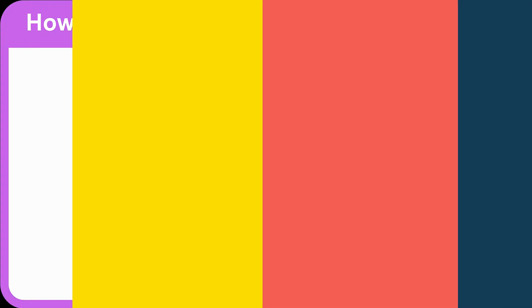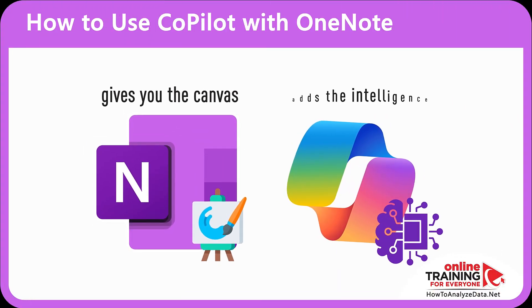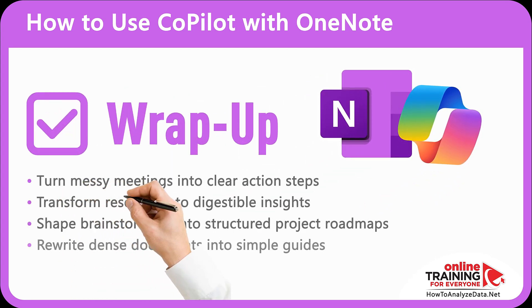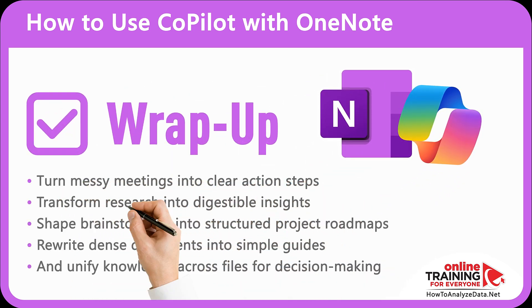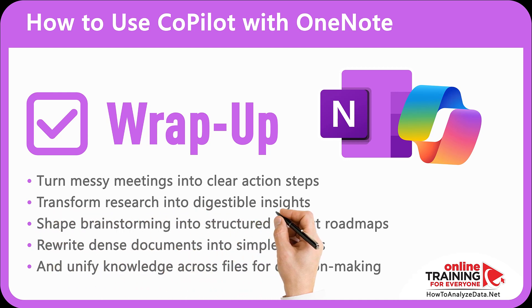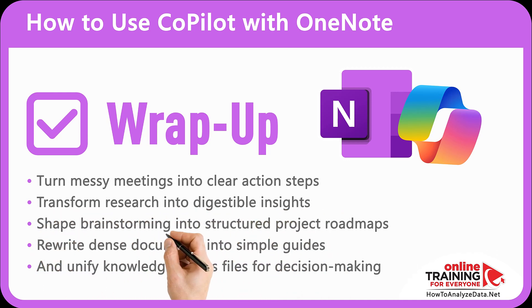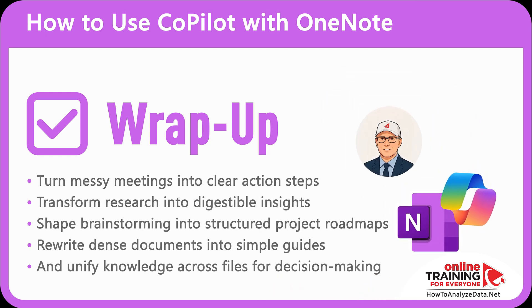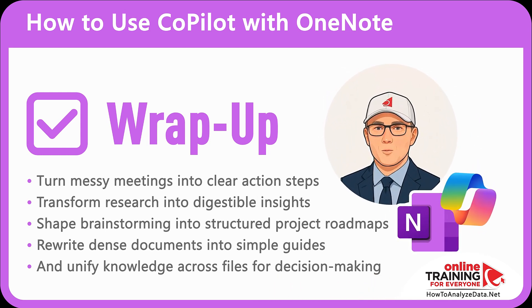So here's the bottom line. OneNote gives you the canvas. Copilot adds the intelligence. Together, they can help you turn messy meetings into clear action steps, transform research into digestible insights, shape brainstorming into structured project roadmaps, rewrite dense documents into simple guides, and unify knowledge across files and decision making. The result? Fewer scattered notes, more clarity, and faster action. With Copilot, OneNote becomes not just a notebook, but your productivity partner.